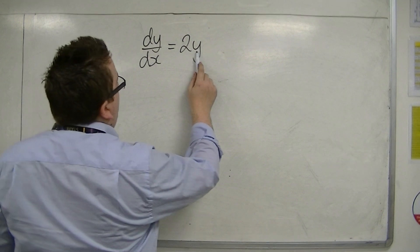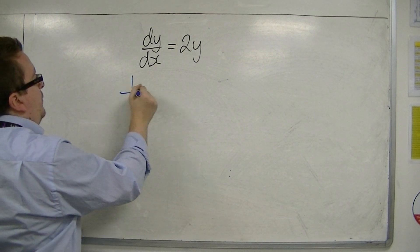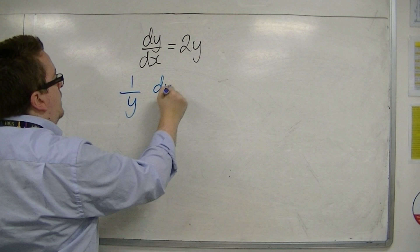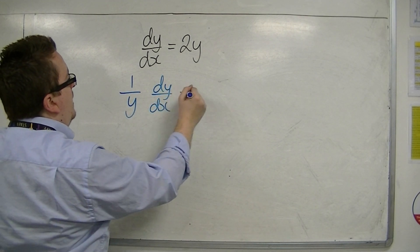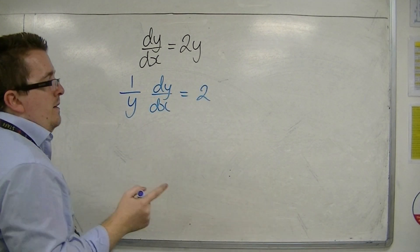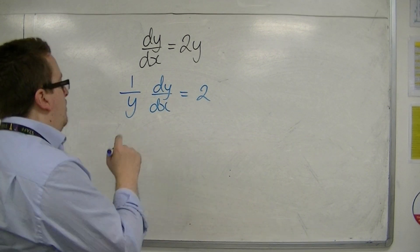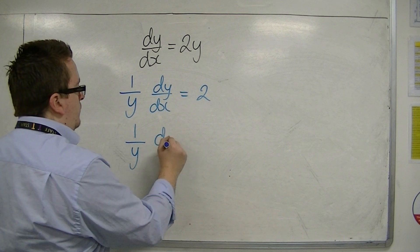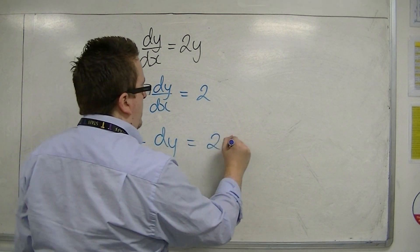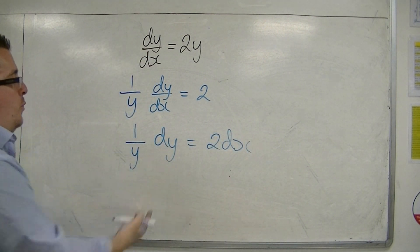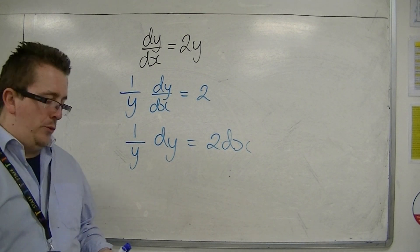So I'm going to get this y over to the left-hand side by dividing both sides by y. Okay, that would be my first step. And then I want to move this dx over to the right-hand side. So I multiply both sides by dx. And I'm left with 1 over y dy is equal to 2 dx.